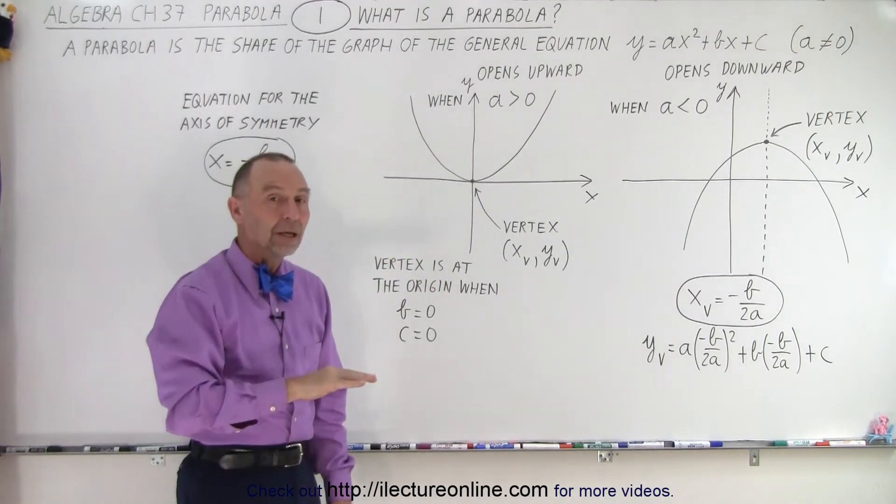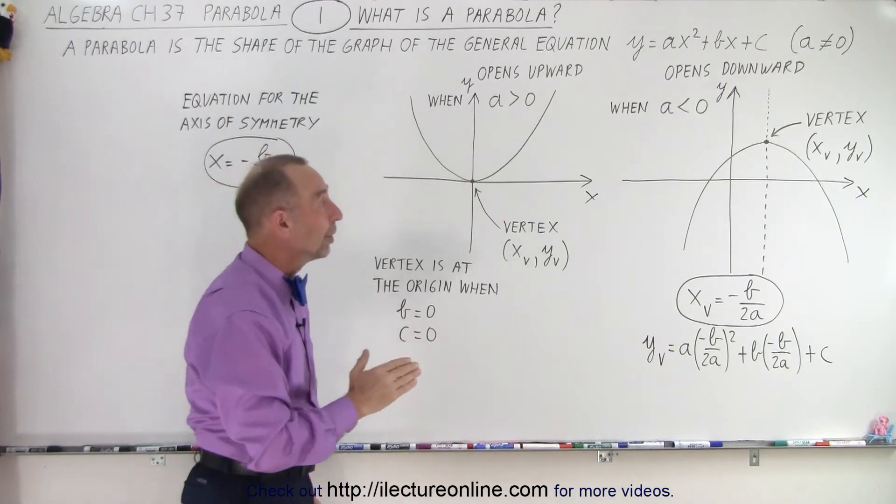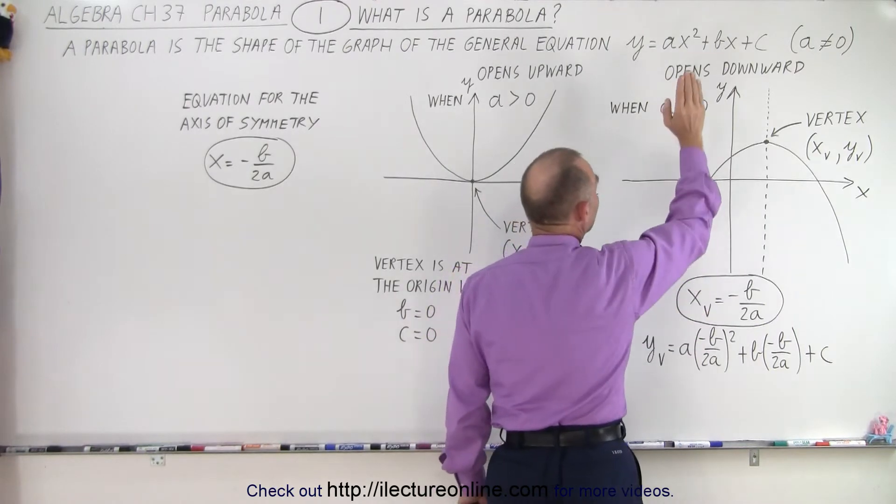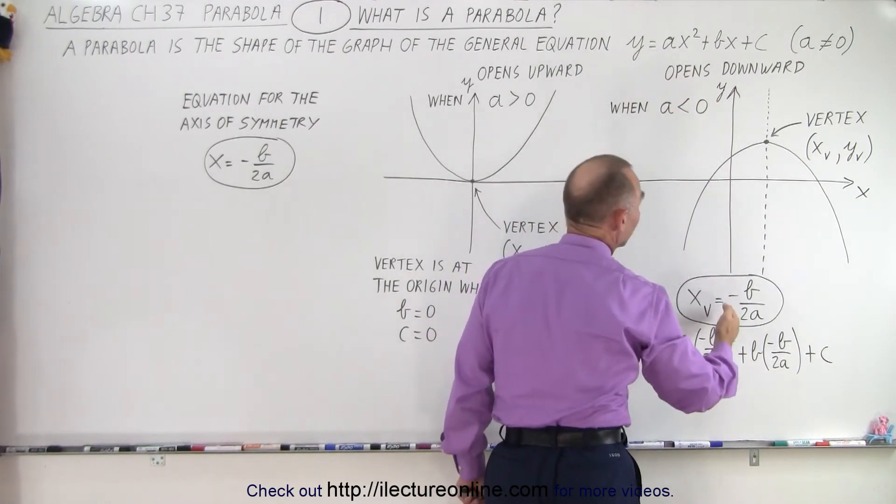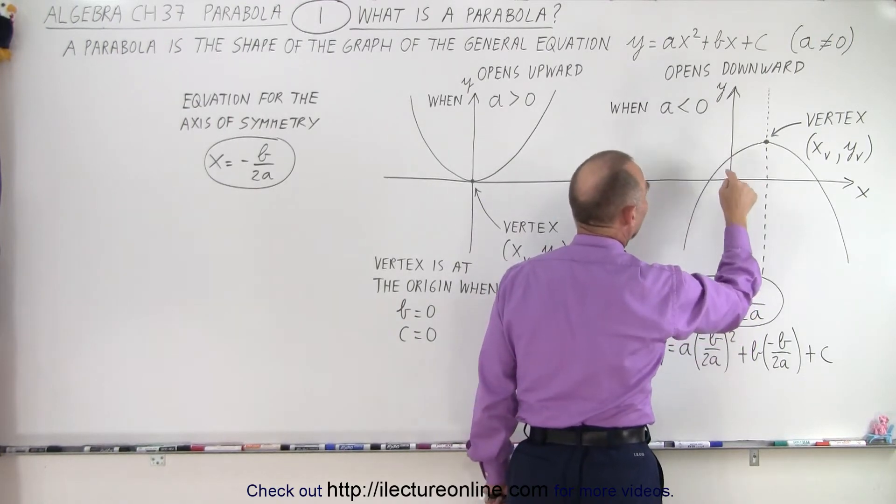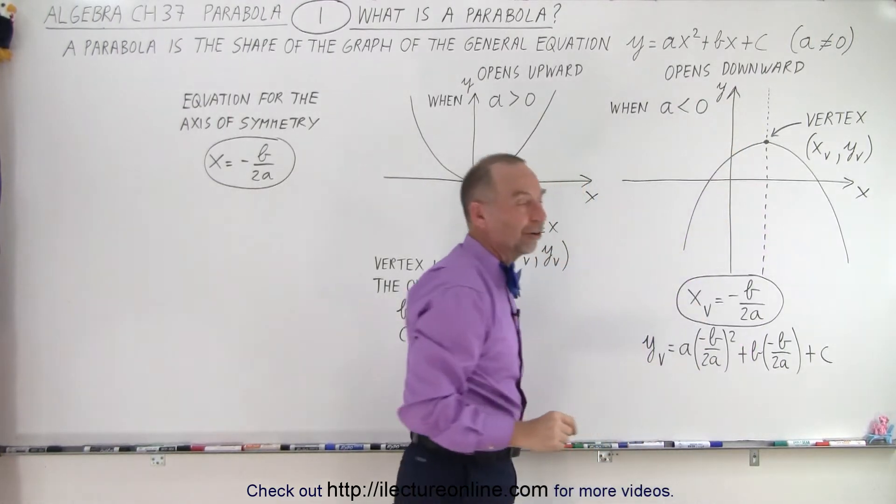When b is not zero, then the vertex will be away from the y-axis. If b is zero, then the vertex will be on the y-axis, but it will not be at the origin if c is not zero.